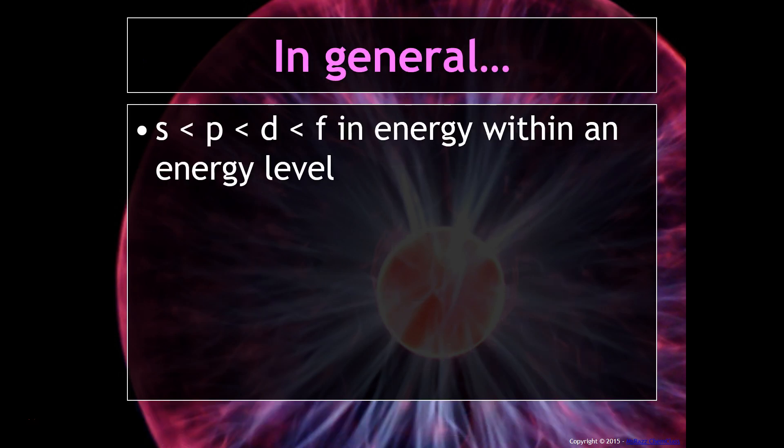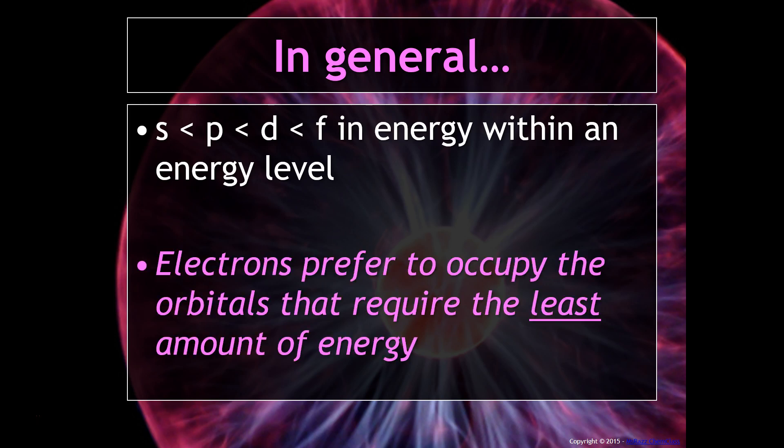In general, s is lowest in energy, then p, then d, then f. The f is highest in energy. Electrons are often said to be lazy particles, which means they don't want to exert more energy than they have to. Electrons prefer to occupy the orbitals that require the least amount of energy. As you might expect, those are the ones closest to the nucleus.